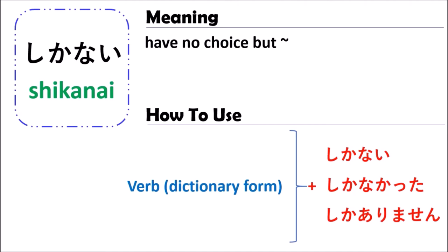In Japanese, when you use the grammar of しかない, you use the verb in dictionary form, followed by しかない or しかなかった. しかなかった (shikanakata) is the past tense, and しかない (shikanai) is the present tense.